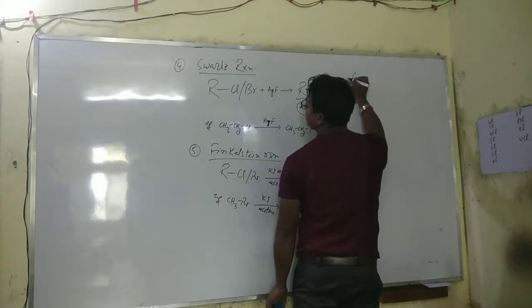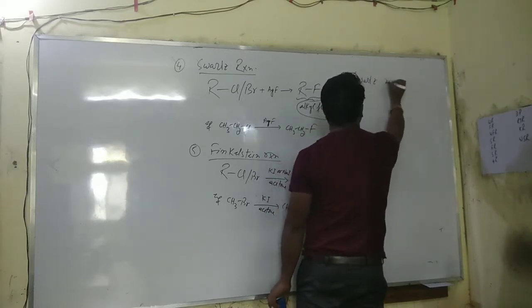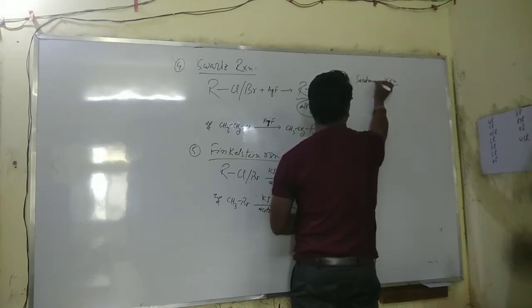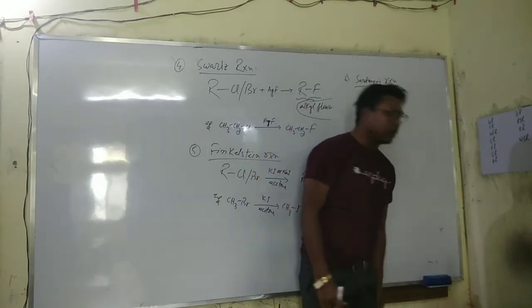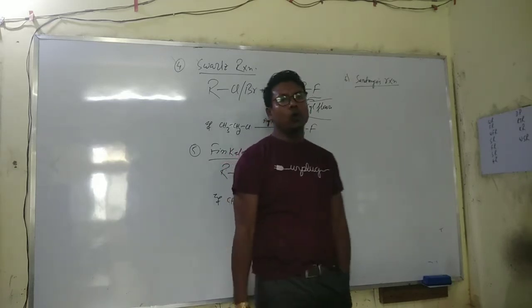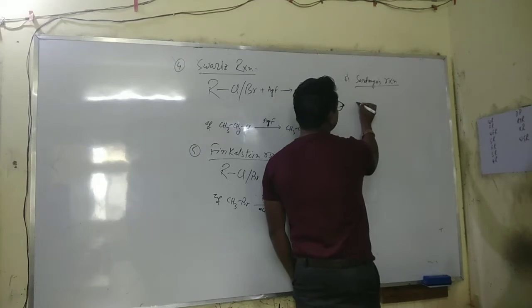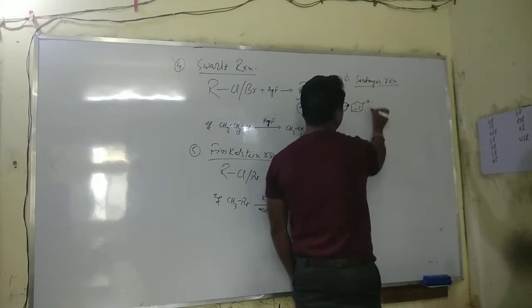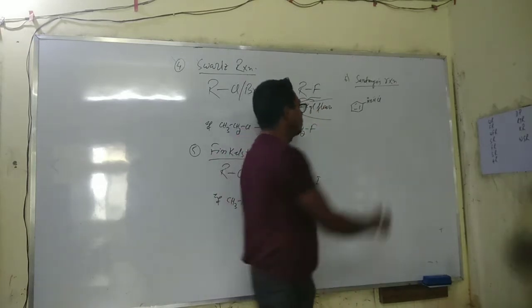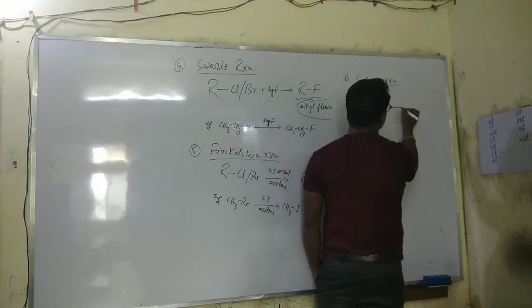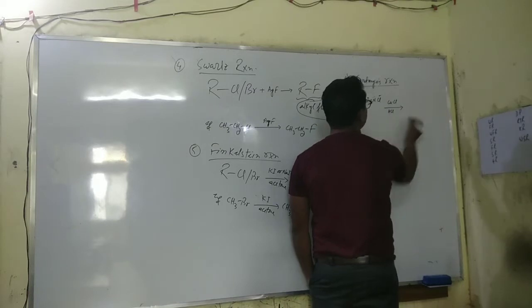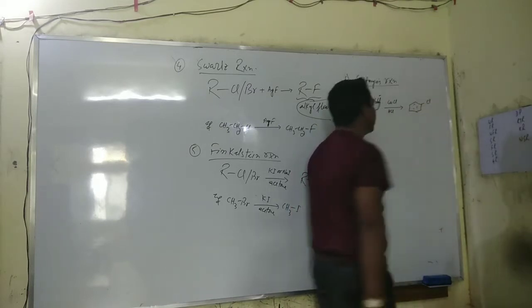The sixth type of reaction is the Sandmeyer reaction. In the Sandmeyer reaction, benzene diazonium salt reacts with cuprous chloride or cuprous bromide to form chlorobenzene or bromobenzene. For example, benzene diazonium chloride reacts with cuprous chloride or cuprous bromide in the presence of HCl, and we will get chlorobenzene as the product.